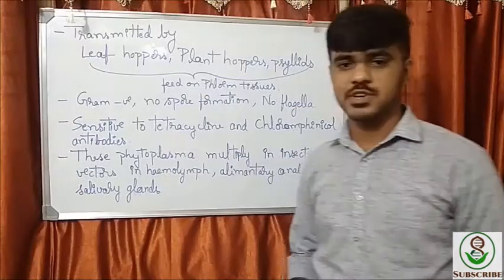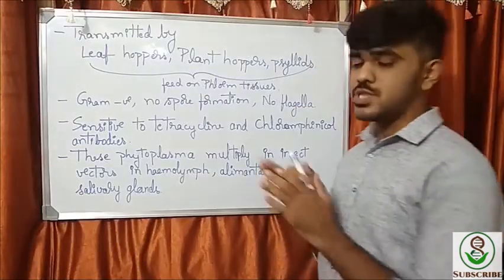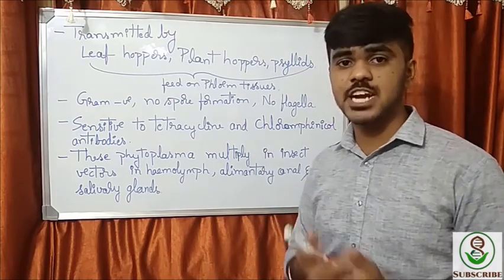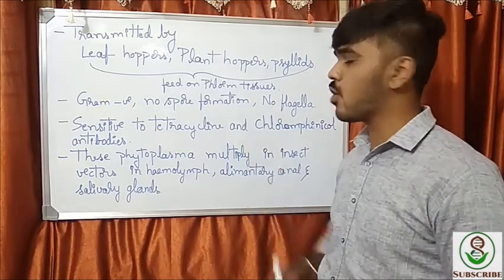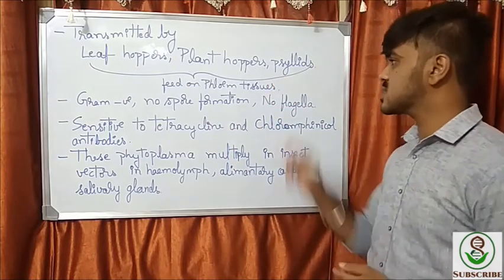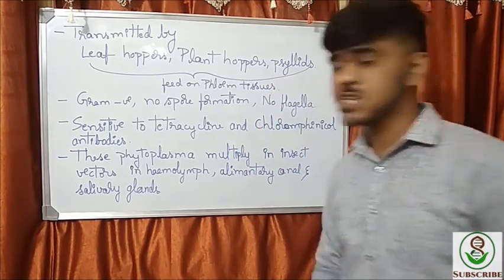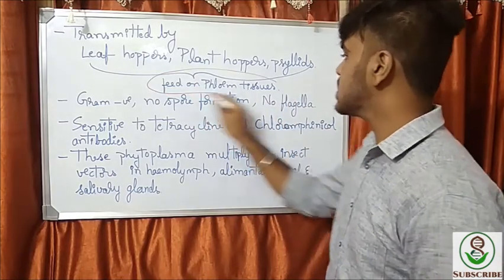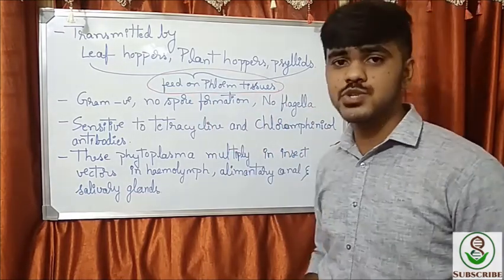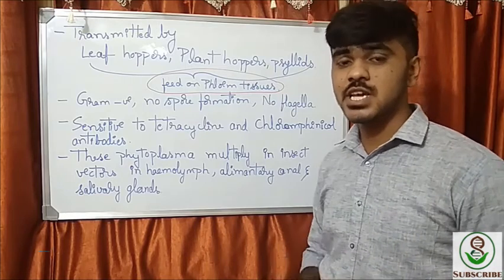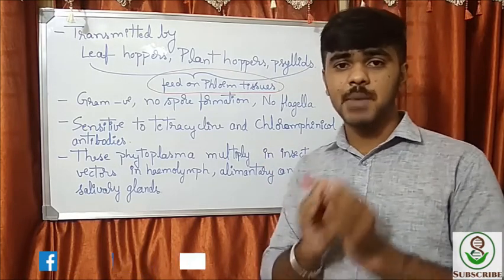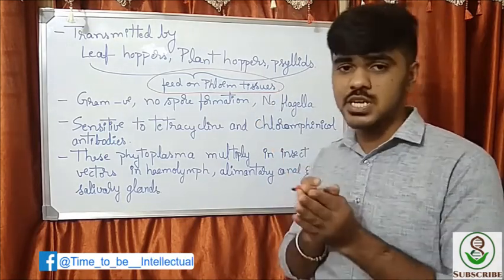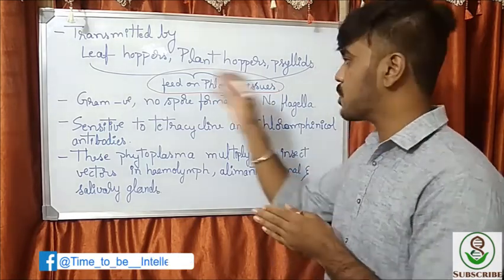Phytoplasmas are transmitted with the help of vectors — leafhoppers, planthoppers, and psyllids. These three insect vectors feed on the phloem tissues of the plant. Since phytoplasma mainly survives in phloem tissue, it is easily transmitted by these insects.